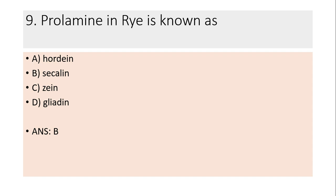Ninth question: Prolamine in rye is known as hordein. The prolamine glycoprotein present in barley is known as hordein. Zein is the prolamine glycoprotein present in maize. Gliadin is the prolamine glycoprotein present in wheat.